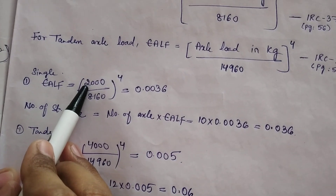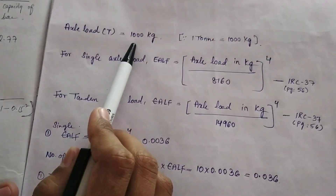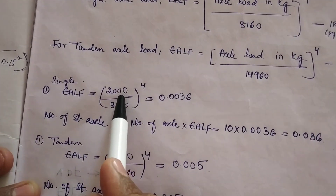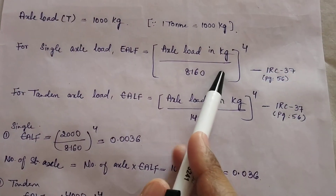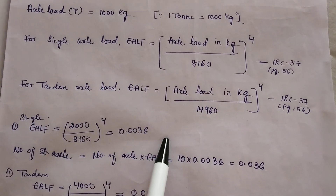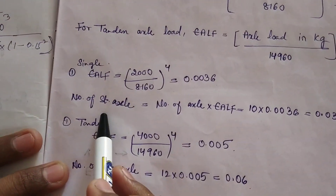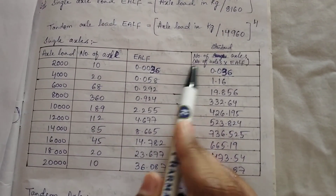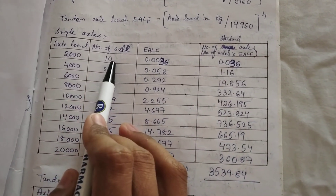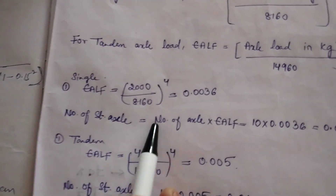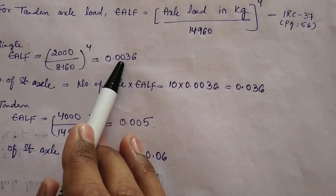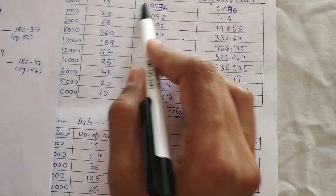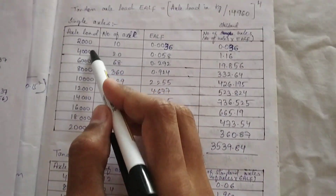For the first sample, the question gives 2 tons. Multiplying by 1000 gives 2000 kg. So EALF = (2000 / 8160) raised to the power 4, giving the calculated value. Number of extended axles = number of axles × EALF. The number of axles is given in the question — for example, 10 or 20 — and we multiply by the calculated EALF. Do the calculation for remaining values and take the total summation of the last column.